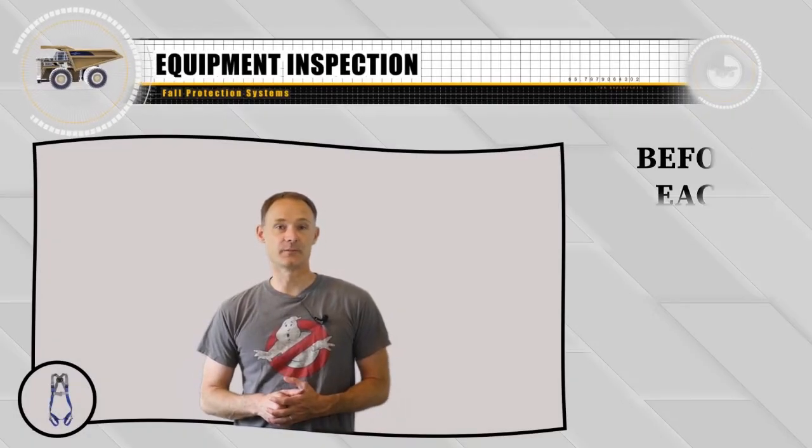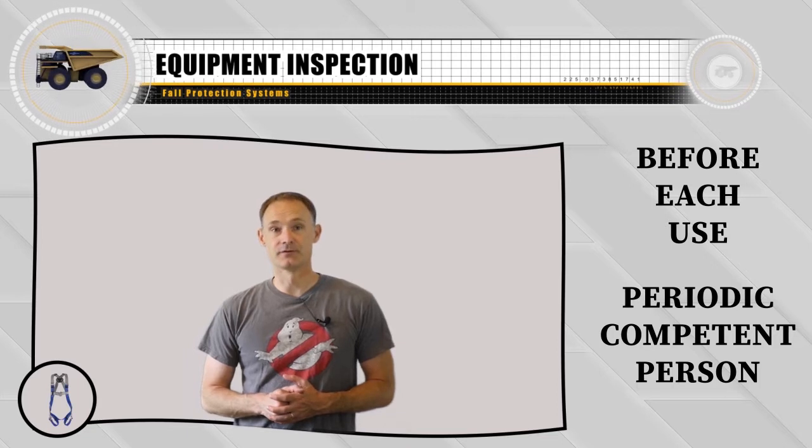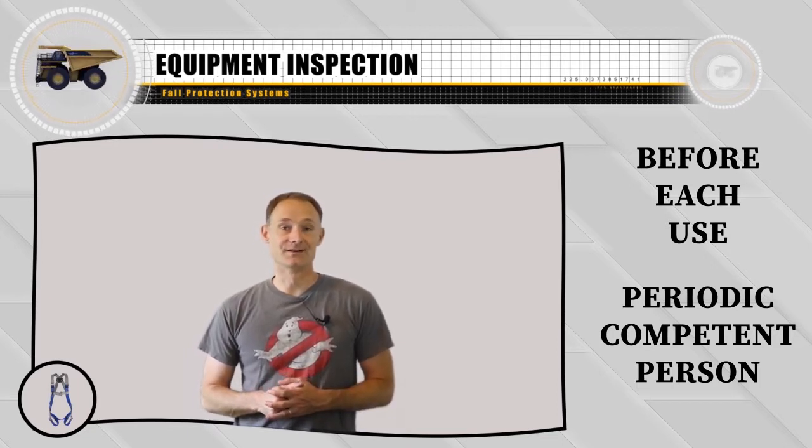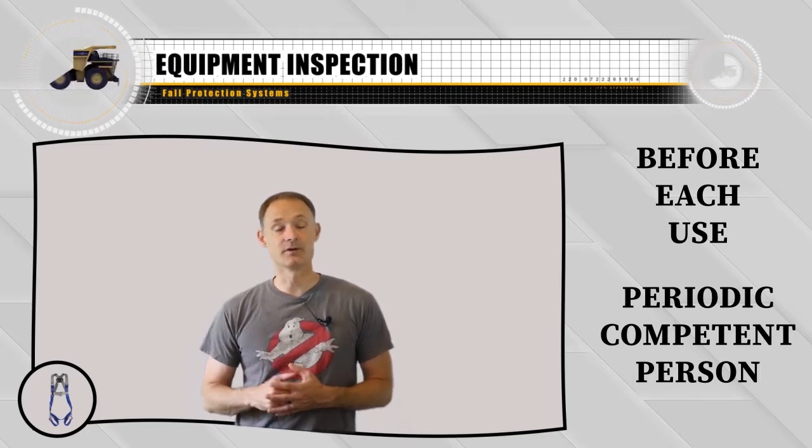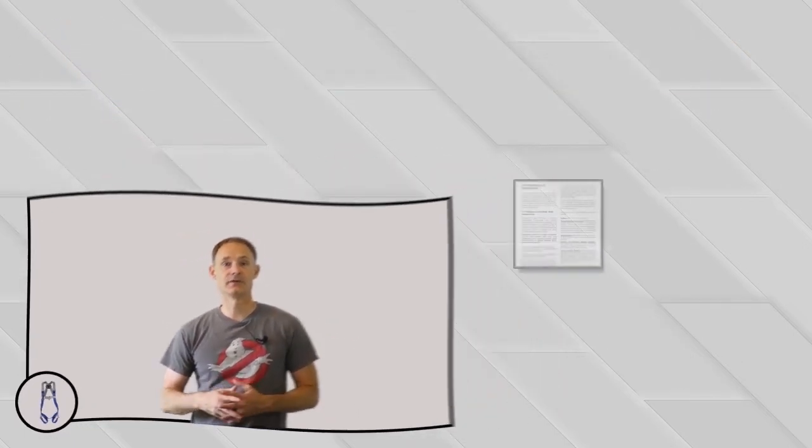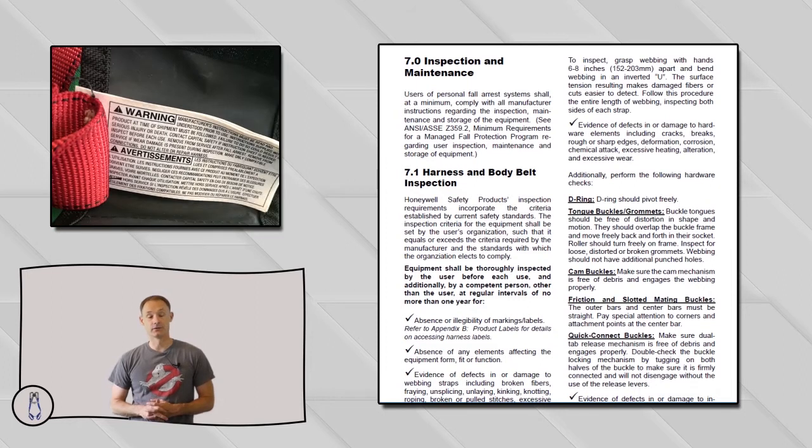Personal fall arrest systems need to be inspected prior to each use. A periodic inspection by a competent person is also required. ANSI recommends these periodic inspections be done at least annually, but check your equipment owner's manual because their requirements are often more frequent. The best place to get inspection requirements is from the owner's manual for the equipment that you are using. You can also often find it on the tag or label.